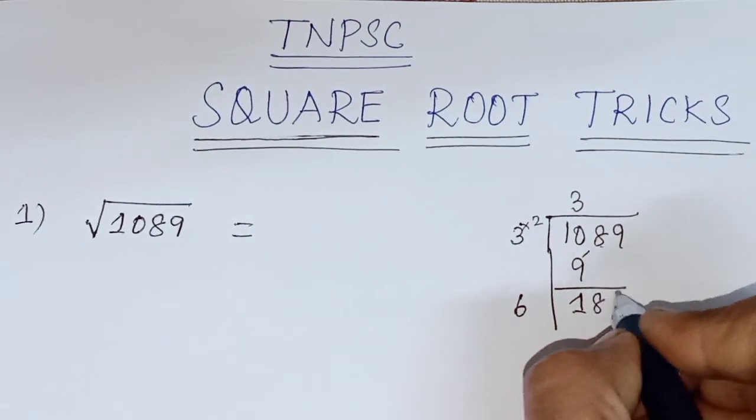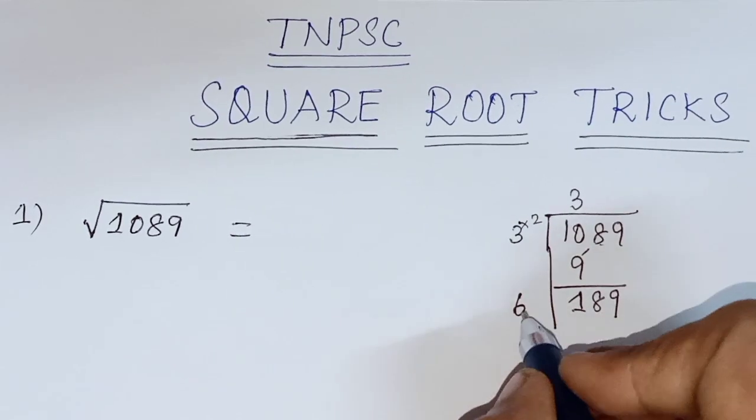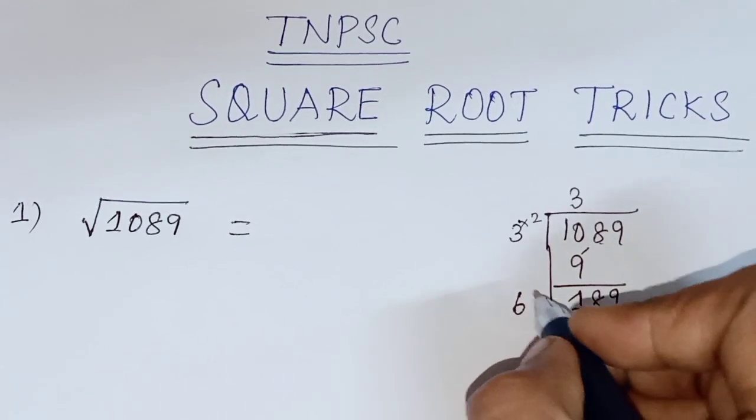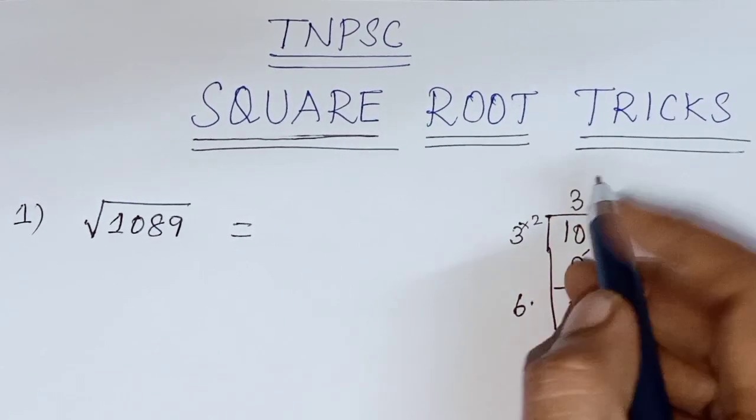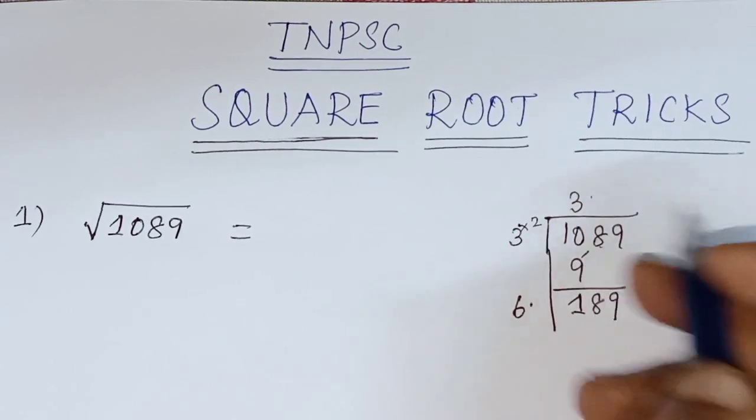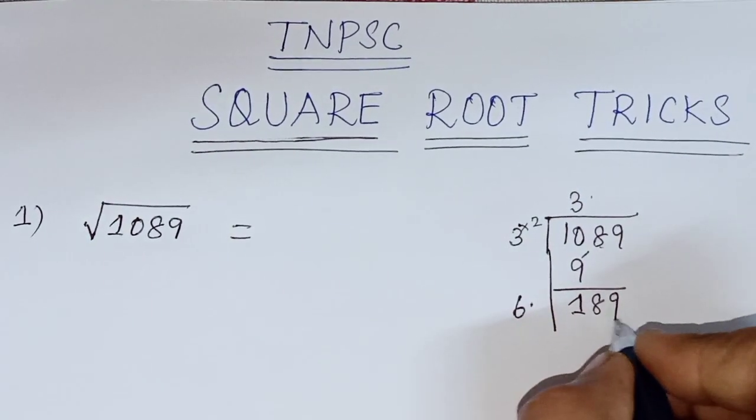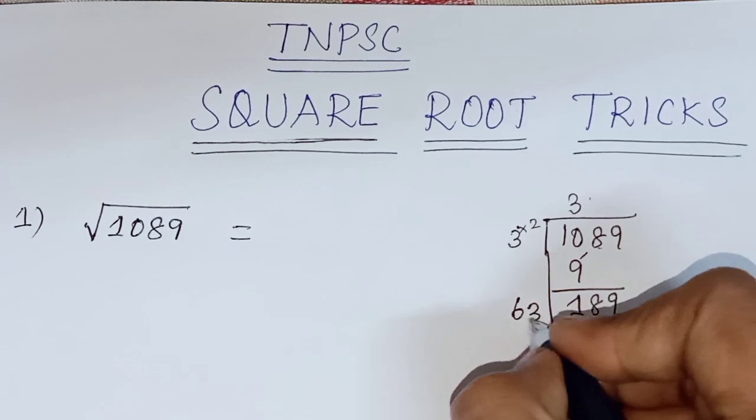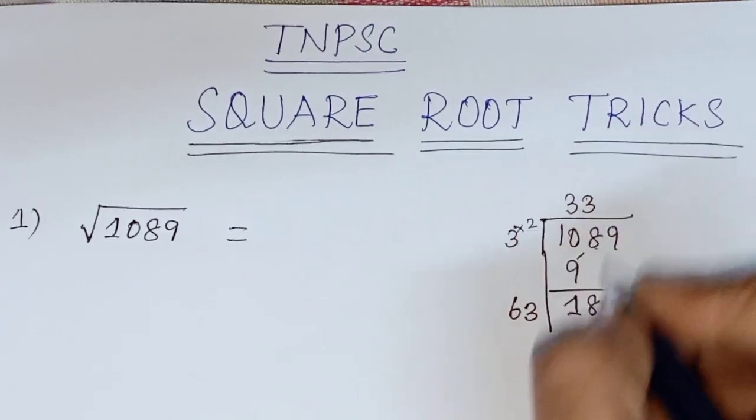So 89 is equal. So multiple. So in the same digit, you can do the same digit. So in the last digit, 9 is equal. So 3, 3 sir, 9. So 3, 3 sir, 9.